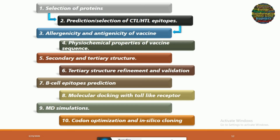Once we have designed a vaccine, we evaluate it at different parameters that include allergenicity and antigenicity — for a vaccine to work better it must be antigenic and non-allergenic. Then we move on to different physicochemical parameters such as molecular weight, theoretical pI, the instability index, and so on. Then we generate the secondary and tertiary structures for that vaccine. The tertiary and secondary structures are then validated and refined so that the structure generated using bioinformatics tools is similar to that produced in the real world.